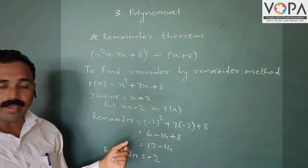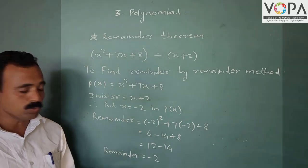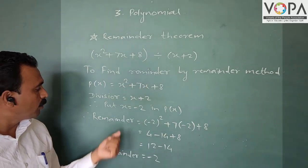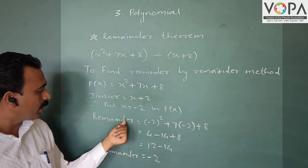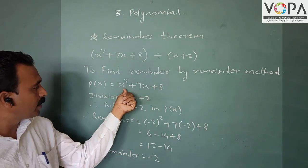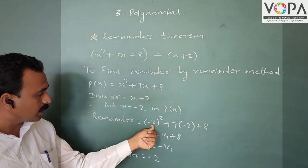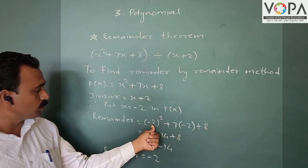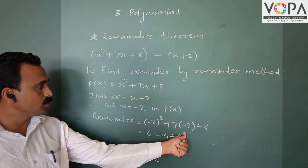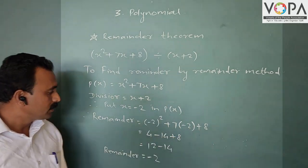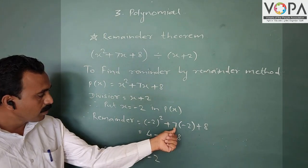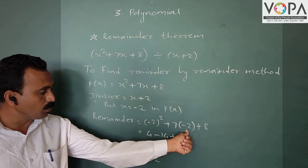Then put the value x = minus 2 in p(x), meaning in the given polynomial. Put x = minus 2. The polynomial is x², so the value of x is minus 2: square of minus 2, plus 7 times x, meaning 7 multiplied by minus 2, and plus 8. Now, the square of negative 2 is 4. For positive 7 and negative 2, the product of positive and negative is negative.